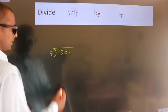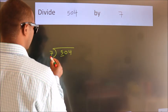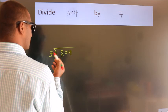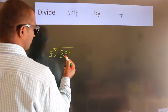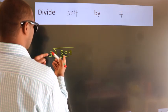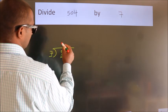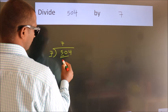Next. Here we have 5, here 7. 5 smaller than 7. So we should take 2 numbers, 50. A number close to 50 in 7 table is 7 times 7, 49.